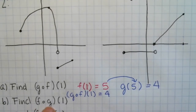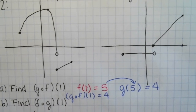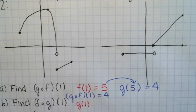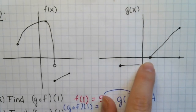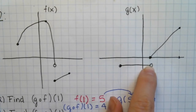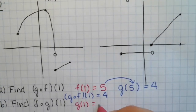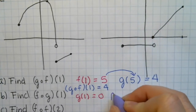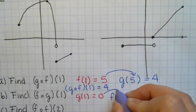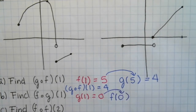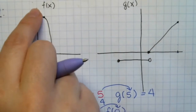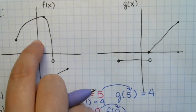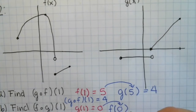Now let's look at f composed with g of 1. First we take the closer function g and plug in our x value. G of 1, we can see from the graph it's the filled-in point, not the empty point, so g of 1 equals 0. Then I take my answer and plug it into my second function f.